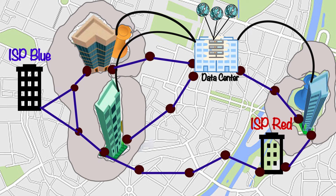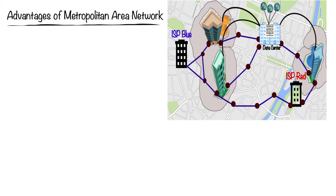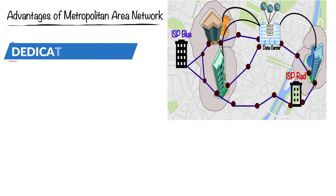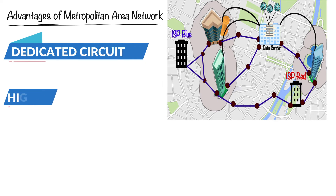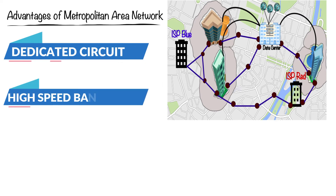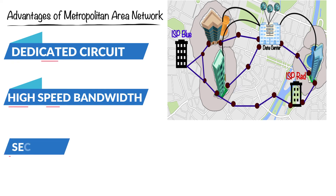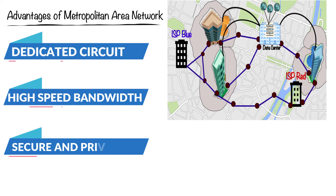They form fiber connectivity from their devices to all the offices. One of the big advantages of having a metropolitan area network is that the circuits provided by the service provider are dedicated to the company, meaning the company can transfer data among all branch offices at very high speed.